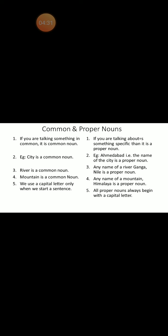But if specifically I say 'Ahmedabad,' that is a proper noun because it is a particular name of a city. River is a common noun — there are many rivers, and we describe them commonly as 'river.' But if I specifically name a river, like river Ganga or river Nile, then that is a proper noun because I am specifically talking about a particular river. In the same way, 'mountain' is a common noun, but if I say 'the Himalayas,' then I am specifically talking about only the Himalayas, so it is a proper noun.